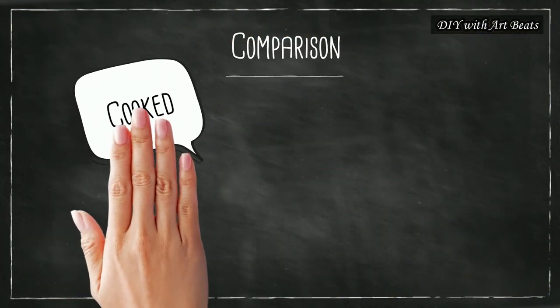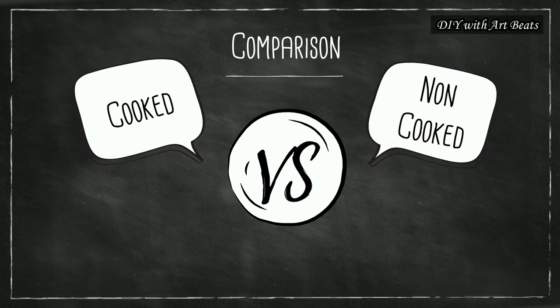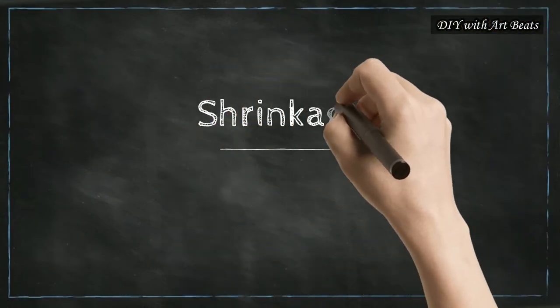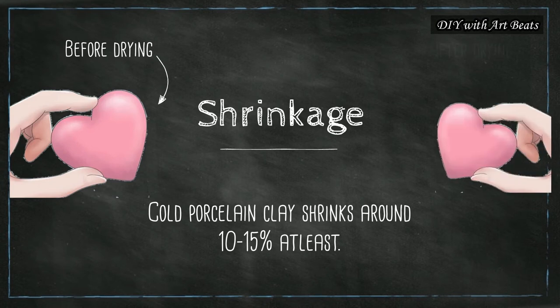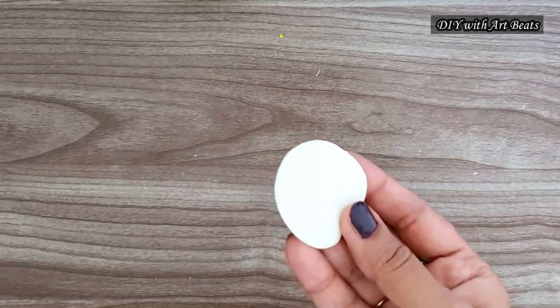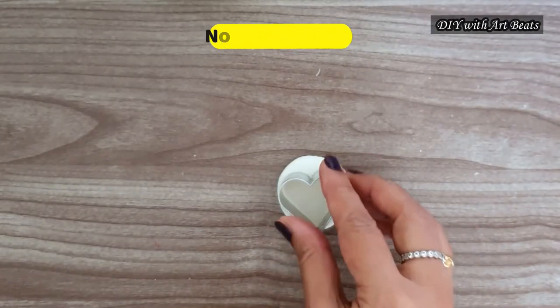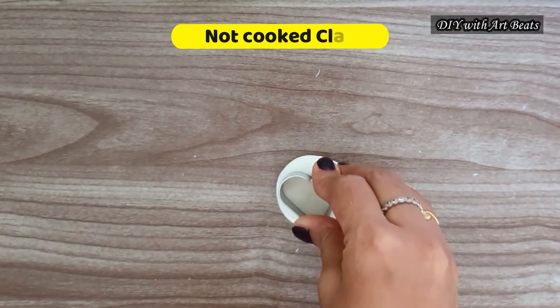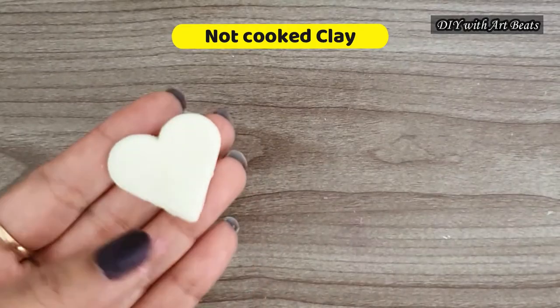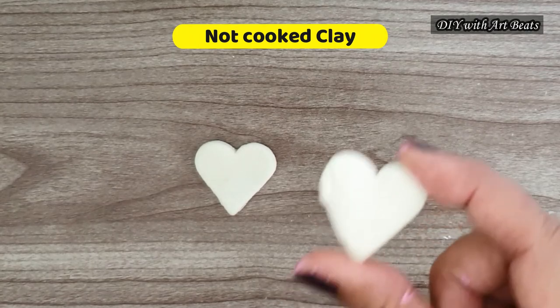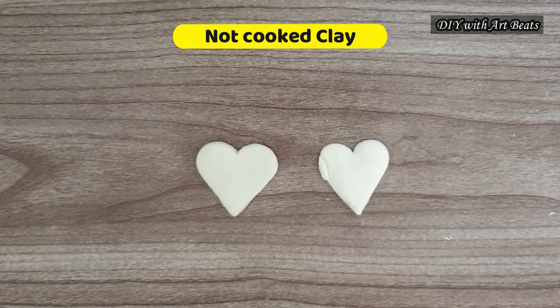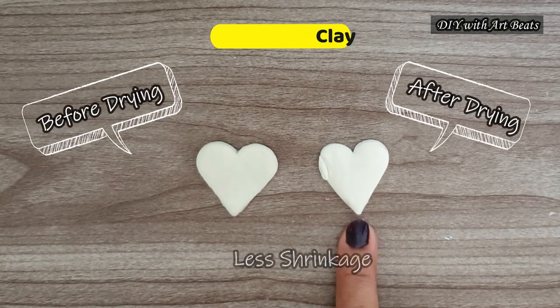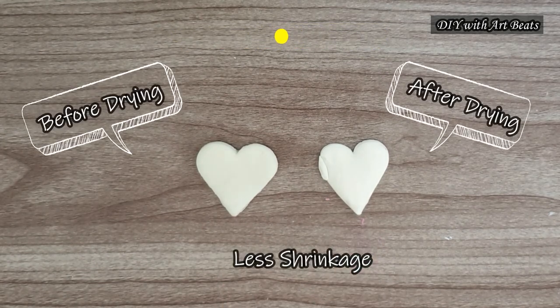Now let's compare the cooked and not cooked cold porcelain clay. First we will compare its shrinkage. After drying, cold porcelain clay shrinks around 10 to 15 percent at least. First we will check for not cooked clay. So I am taking some clay and making this heart shape using a cookie cutter. And this heart shape I have made 2 days ago using the same cookie cutter. So you can see the difference. There is very less shrinkage in this.